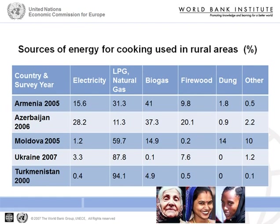Data from demographic and health surveys carried out in recent years across Eastern Europe and Central Asia highlight that even though access to electricity is nearly universal in rural areas, energy for cooking comes from a diverse range of sources. Biomass such as firewood and dung provides a significant source for some rural communities, and its use can come with disproportionate burdens on women and children in terms of time to collect it and health risks from its use.